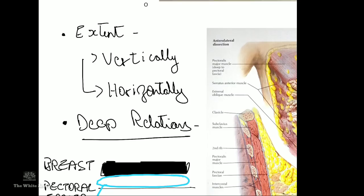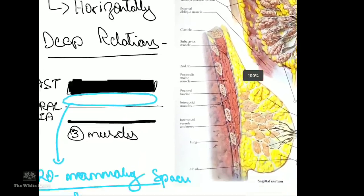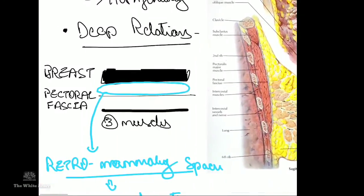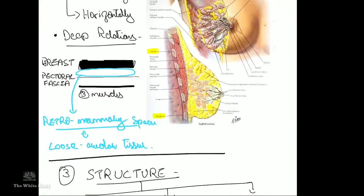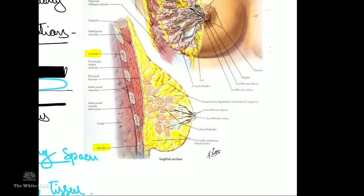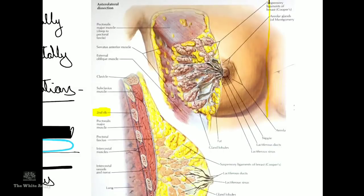The breast extends vertically from the second rib to the sixth rib, and horizontally from the lateral border of the manubrium sternum to the anterior axillary fold.